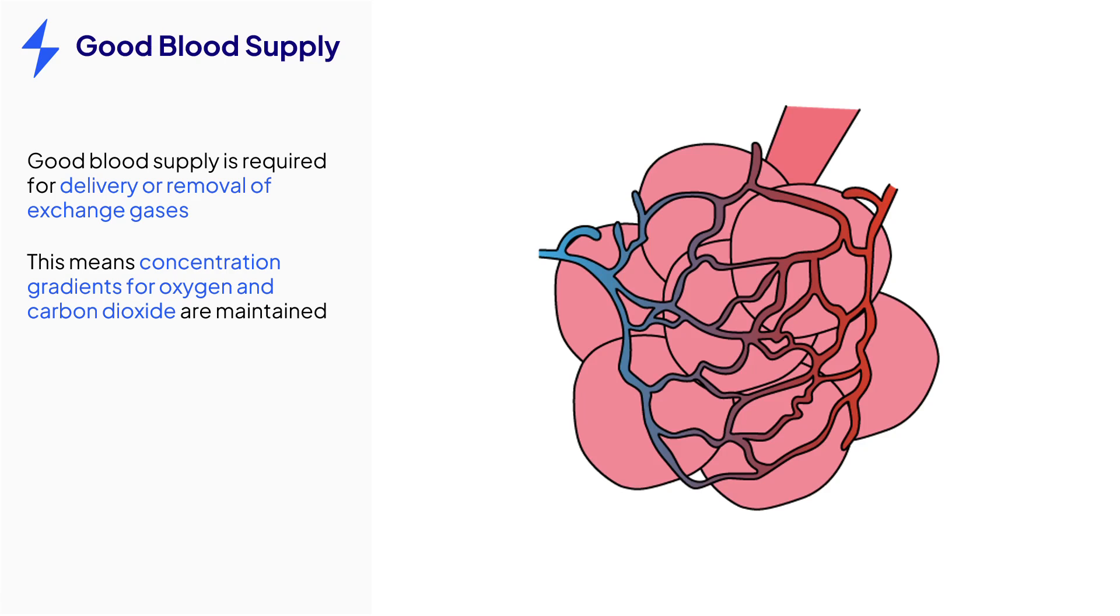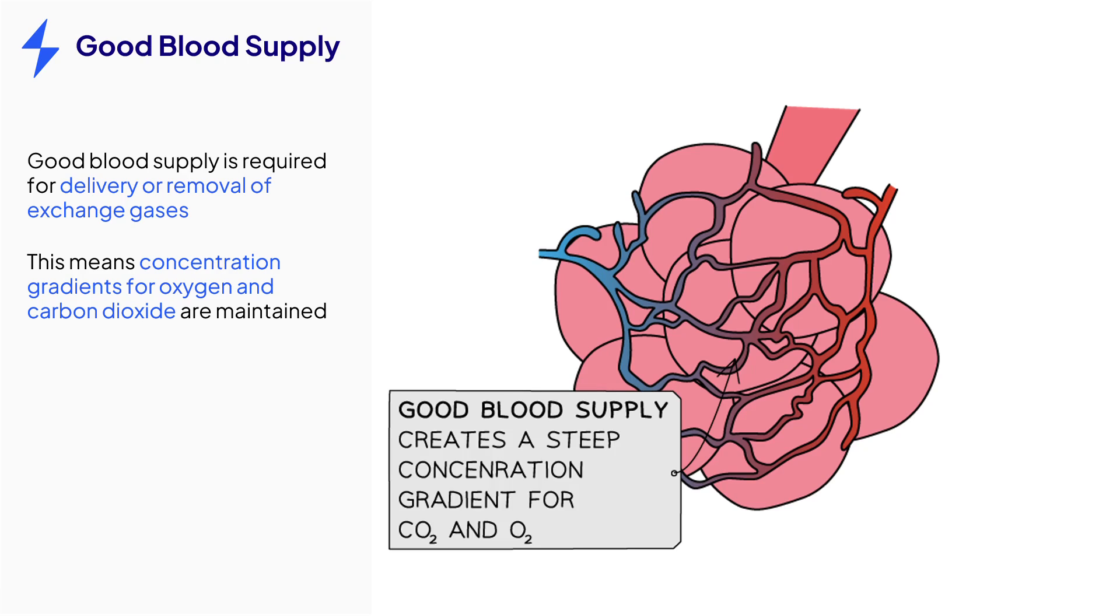You can see in the image that the alveoli are covered in a network of capillaries to ensure that there is a really good blood supply to each alveolus, creating a steep concentration gradient.